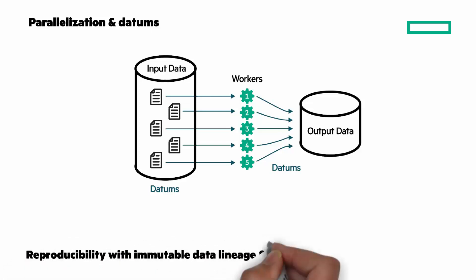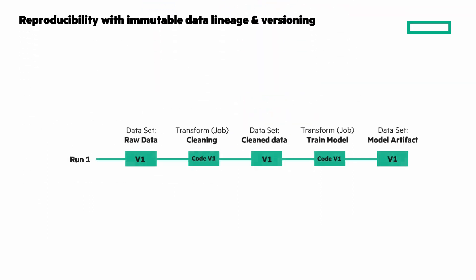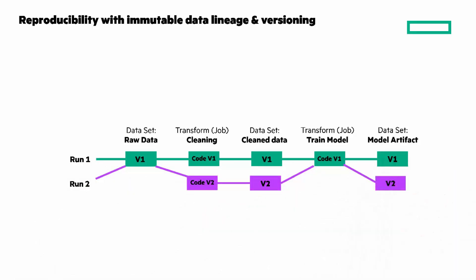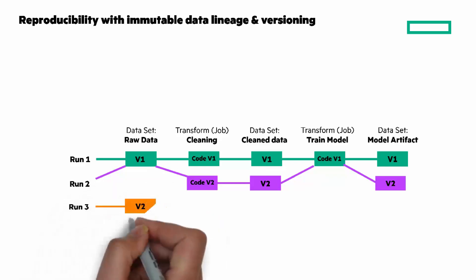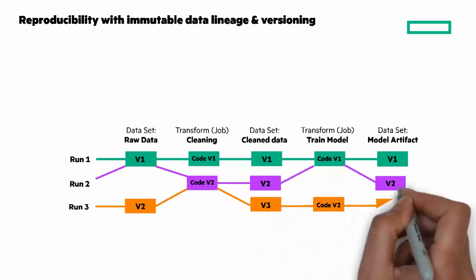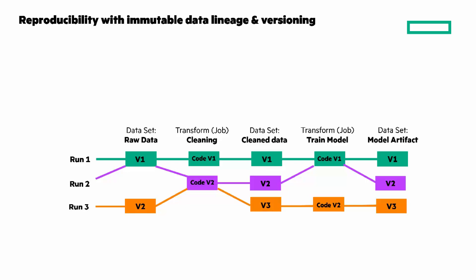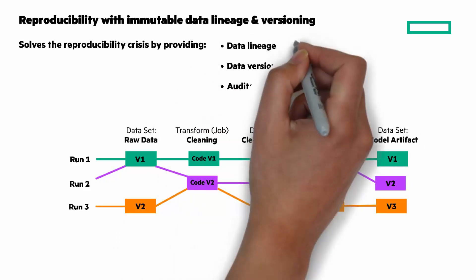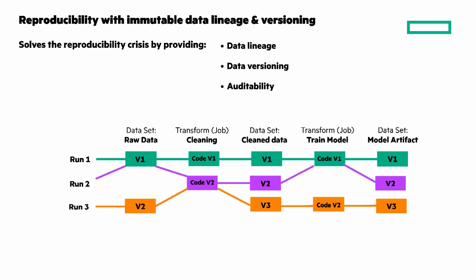Next, let's look at how the software captures the data lineage for every run. Here's a representation of multiple runs. You can see the data set, the transform job, the clean data, train model, and the data set. On the second run, we use a new cleaning job, which gives us new clean data and a new data set. The third run, there's new raw data that gets cleaned, and we end up with new clean data that we run against a new training model, and we get a third data set. HPE Machine Learning Data Management Software tracks all of this automatically, and the lineage is immutable.